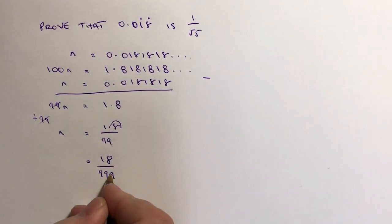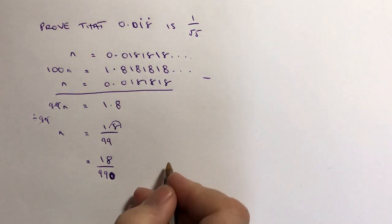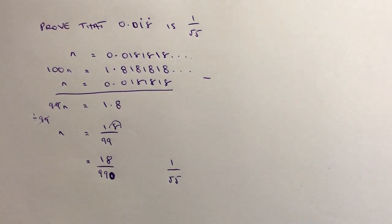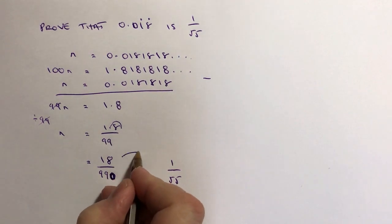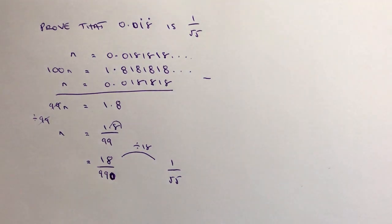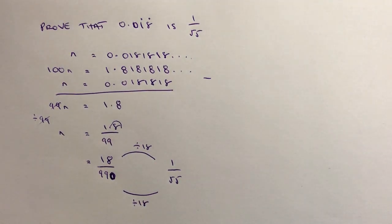Now it's a case of saying, well, I need to convert this to 1 over 55. If my thinking in my math is correct, these are equivalent fractions. Therefore, what we're saying is 18 divided by 18 should equal 1, which is fine, and 990 divided by 18 equals 55. Well, I'm not sure about that, so ordinarily you would reach for a calculator maybe and check that.